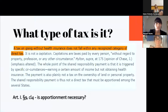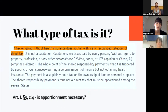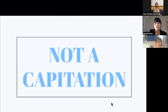The U.S. Constitution doesn't guarantee that individuals may avoid taxation through inactivity. This raises the question of what type of tax it is, which is relevant to determine whether apportionment — the idea that each state contributes in proportion to its population under Article 1, Section 9, Clause 4 — is necessary. As highlighted in the slides, the court concluded that a tax on going without health insurance does not fall within any recognized category of direct tax. It is not a capitation, so it does not require apportionment, and it is plainly not a tax on the ownership of land or personal property. The whole point of the shared responsibility payment is that it is triggered by specific circumstances: earning a certain amount of income but not obtaining health insurance.